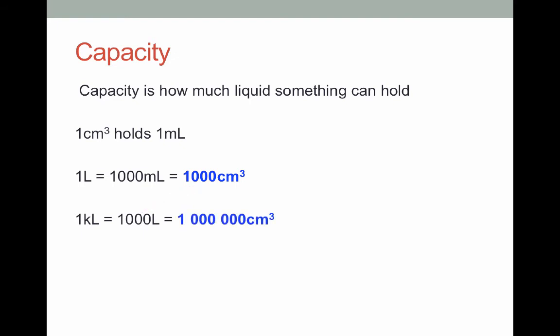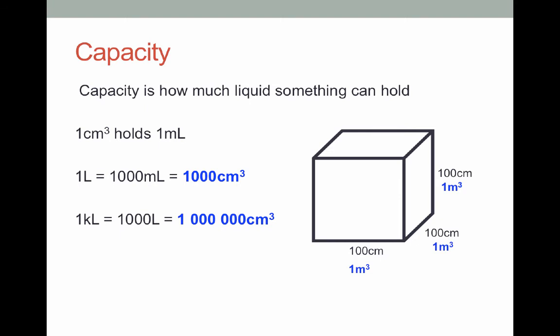So how does that relate to meters? Well a million centimeter cubes is a cube that is a hundred by a hundred by a hundred. Now remember how a hundred centimeters is one meter? So that one kiloliter can be held in a box that is one meter cubed or one meter by one meter by one meter.